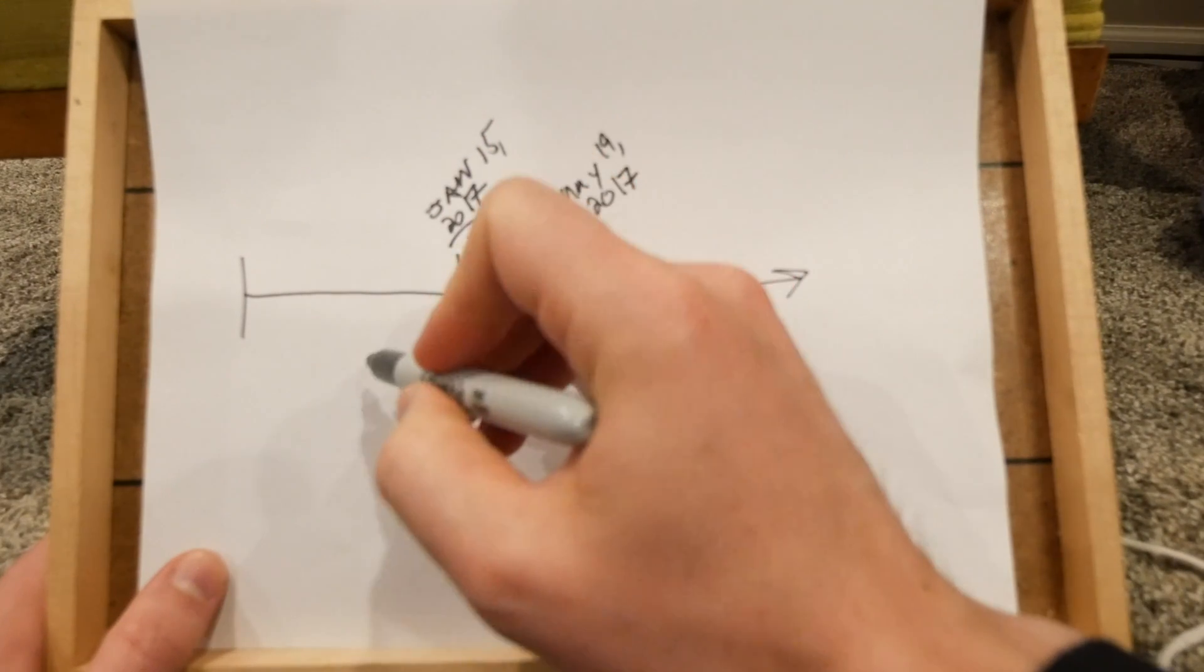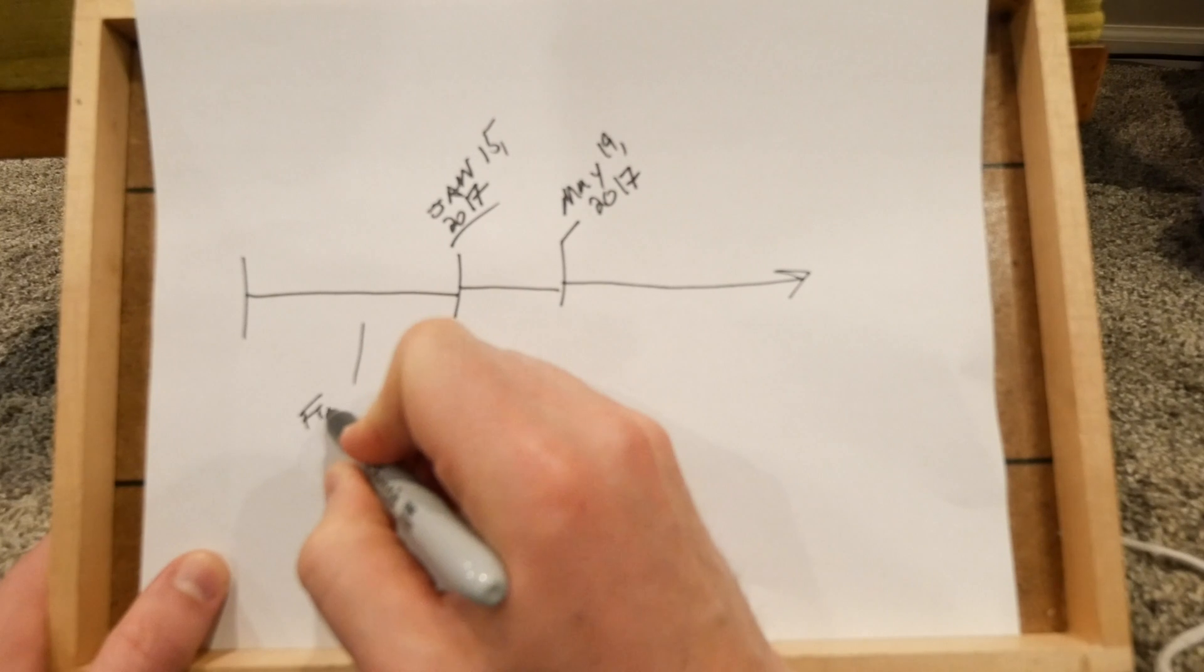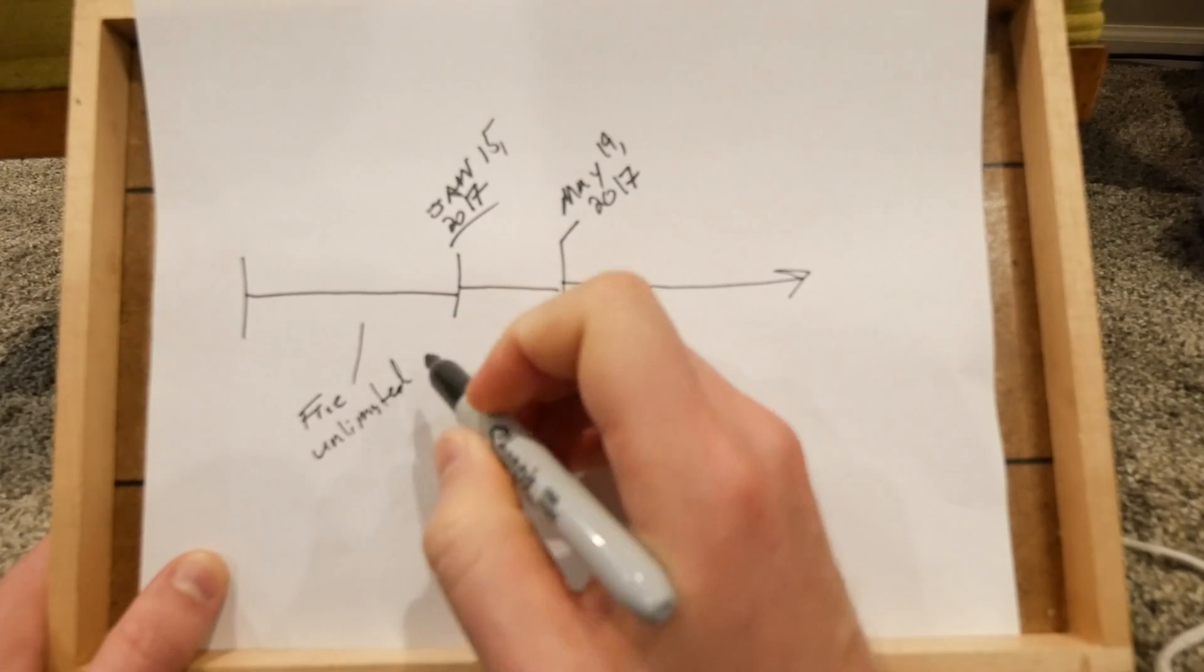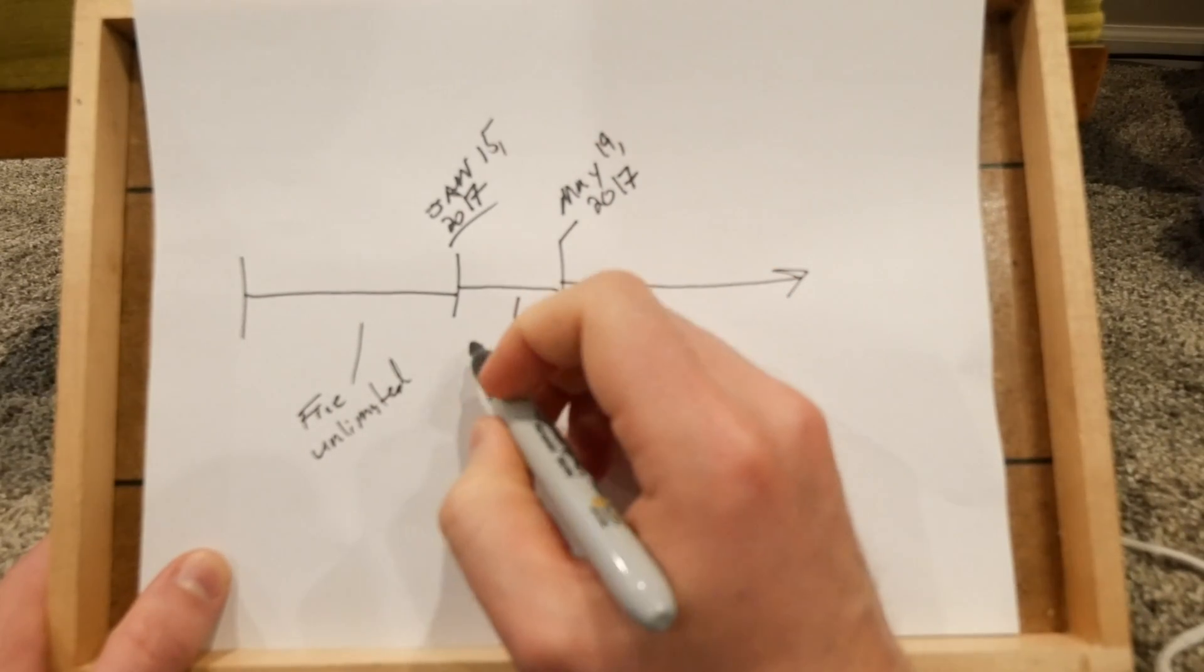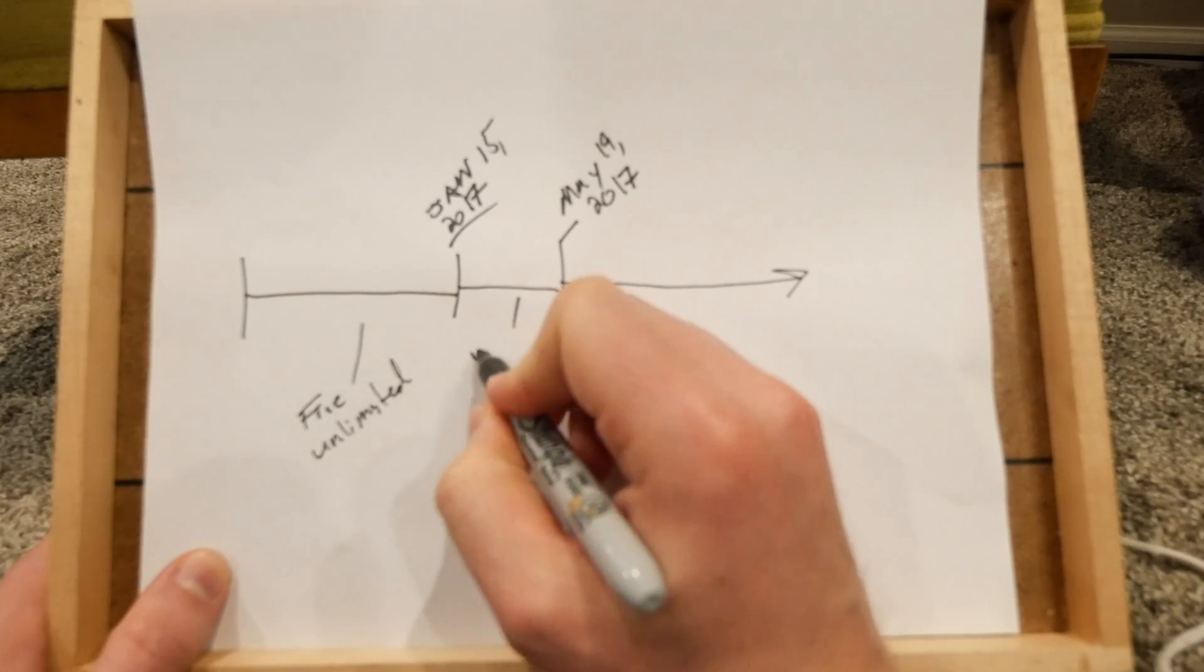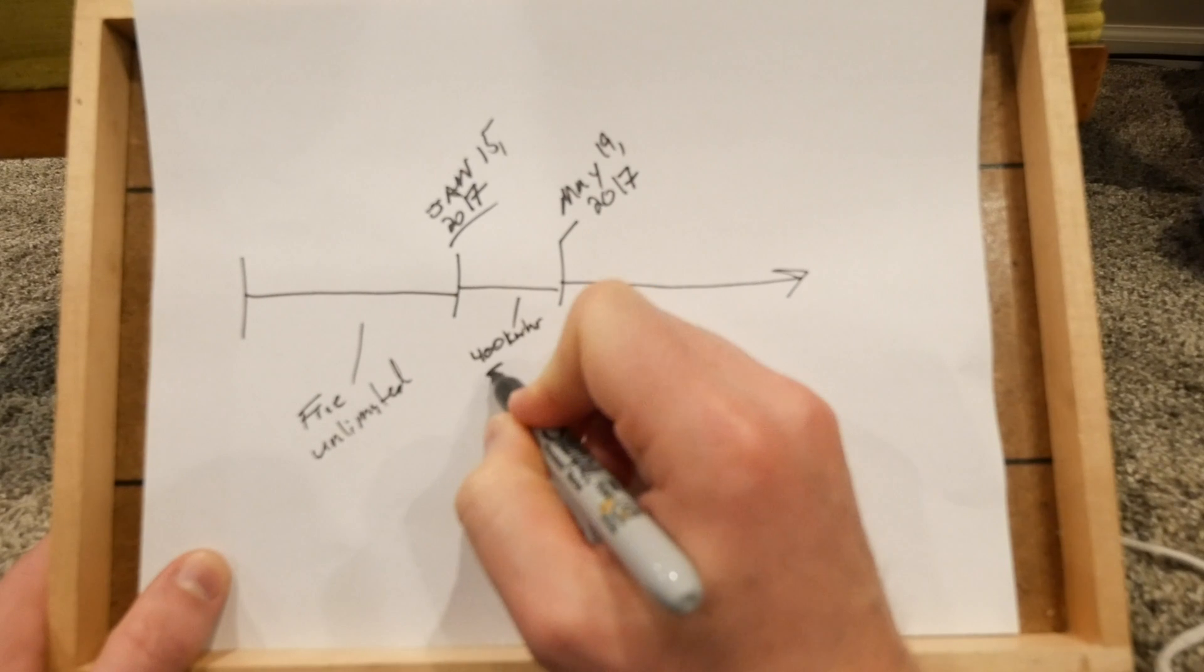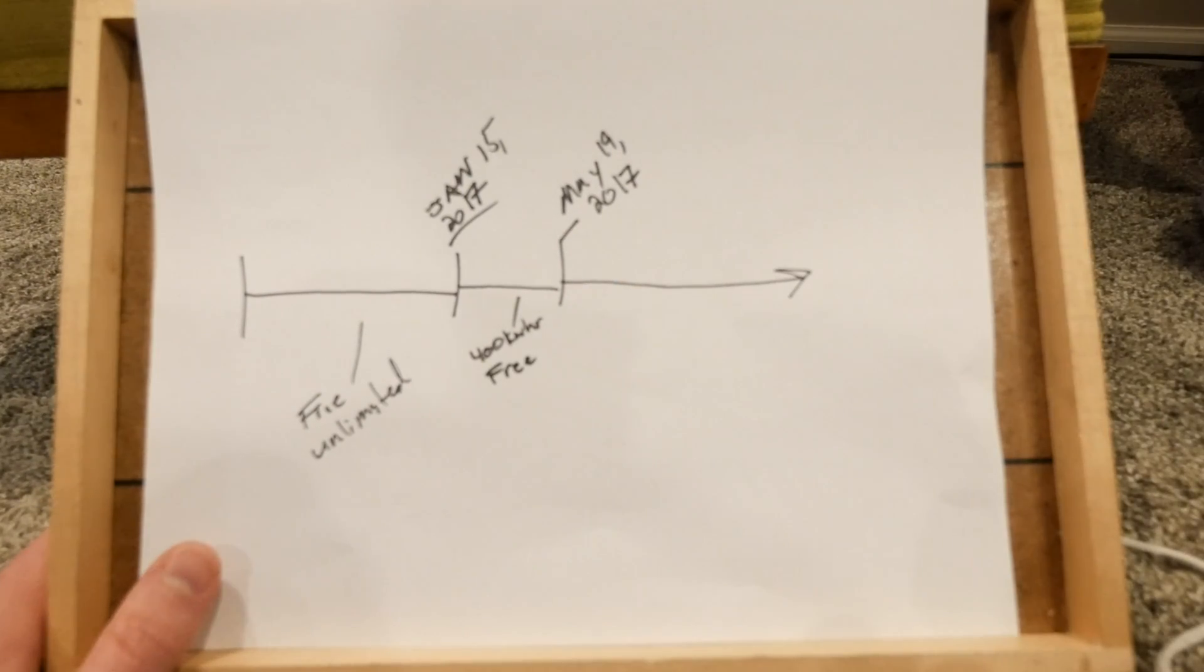So if you bought before this point, which is everybody here, you are free unlimited. Previously, if you had bought during this period, you got 400 kilowatt hours free. And then you had to pay after that. So things have changed a little bit.